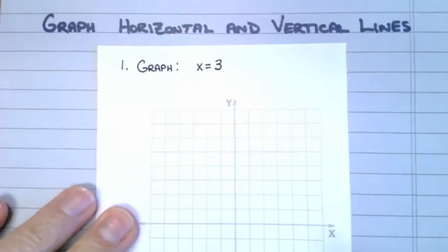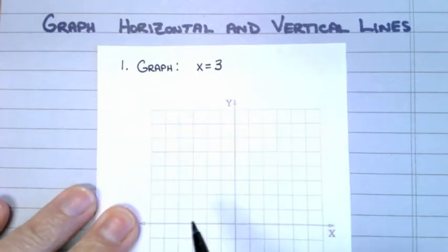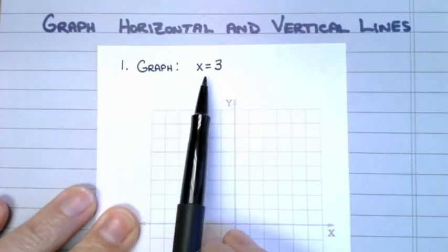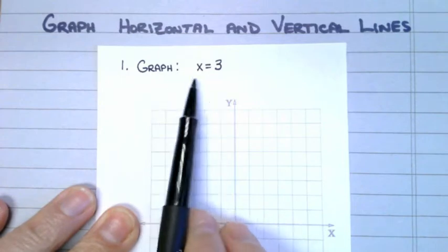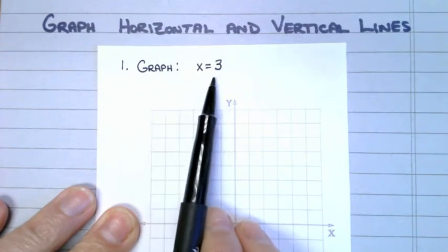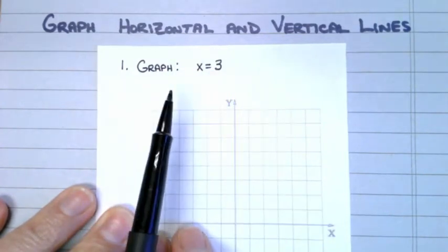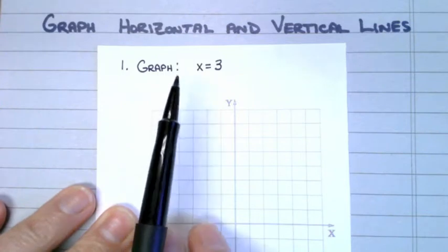Next we're going to go over how to graph horizontal and vertical lines. This equation right here — we need to learn how to graph this. We need to figure out whether or not it's going to be a vertical or horizontal line.